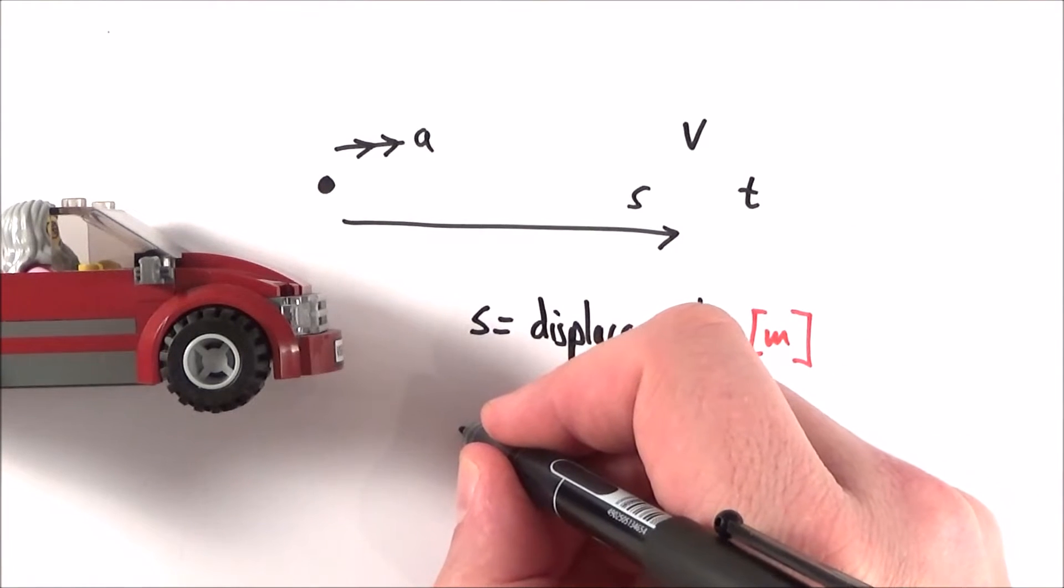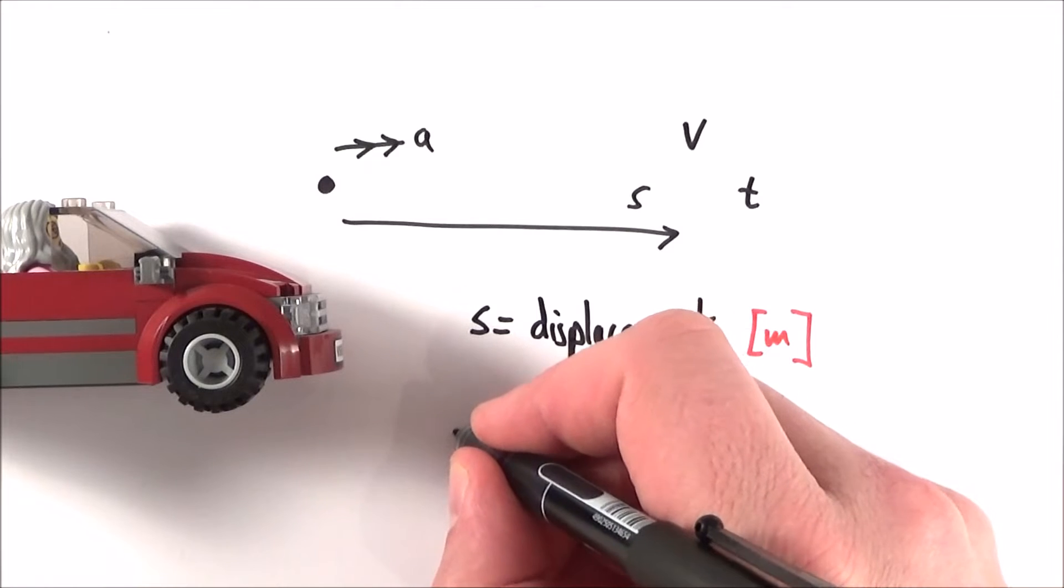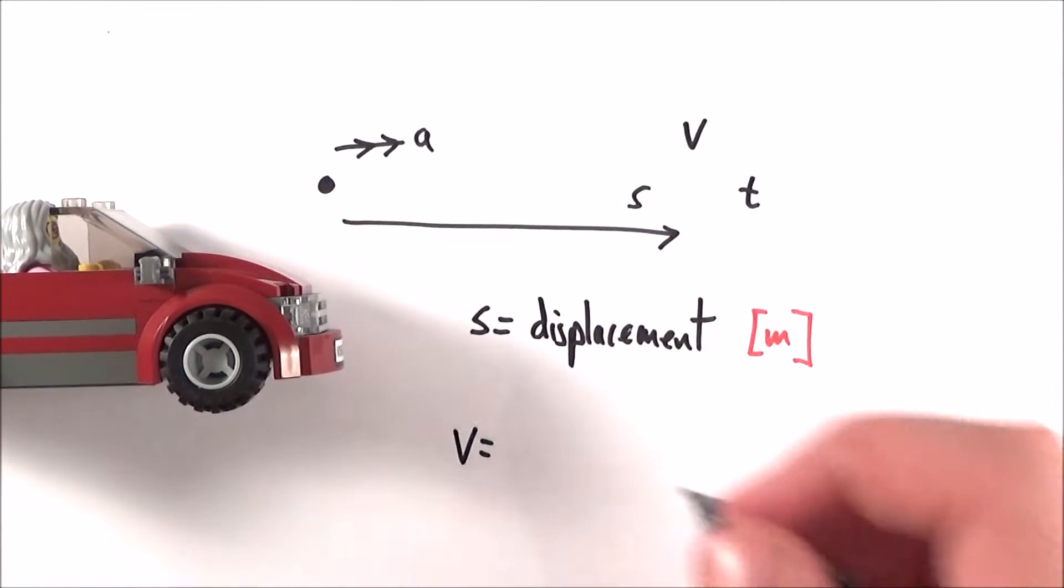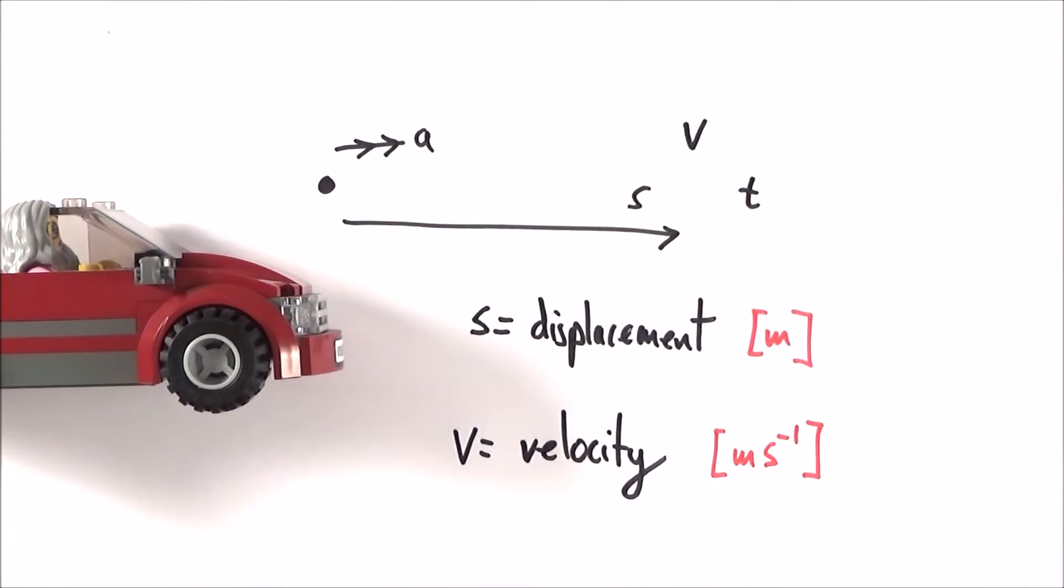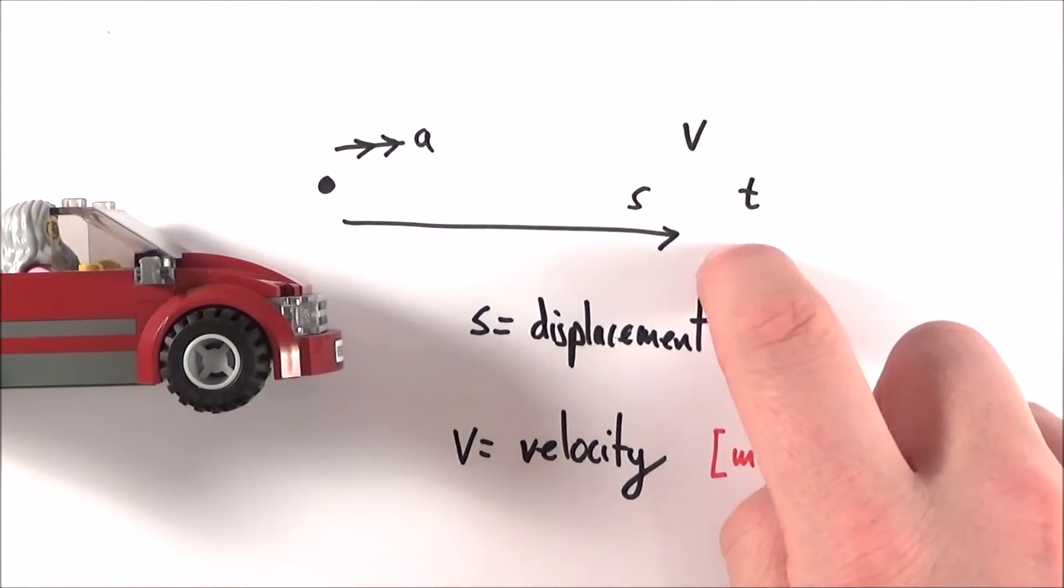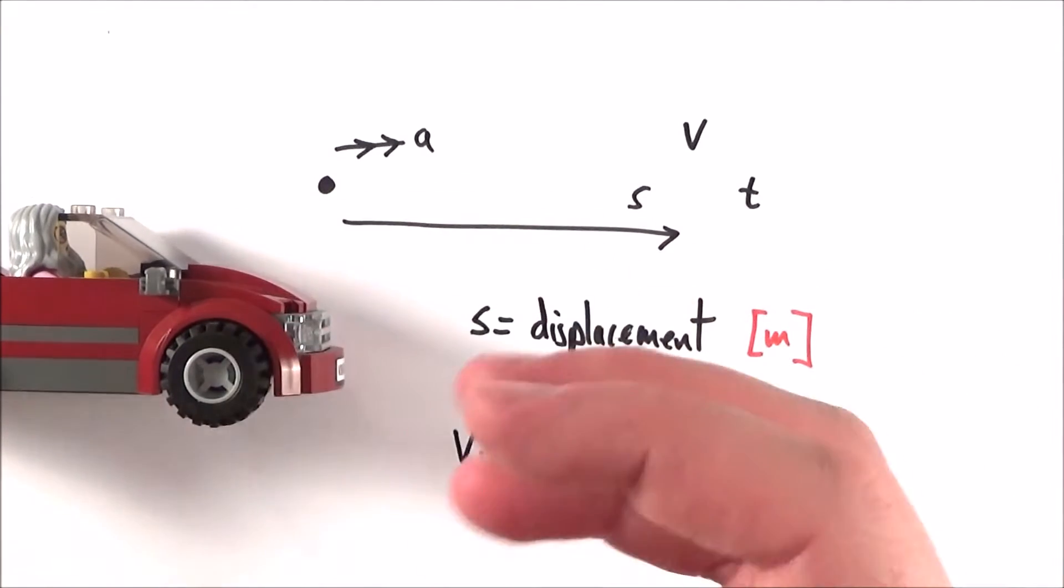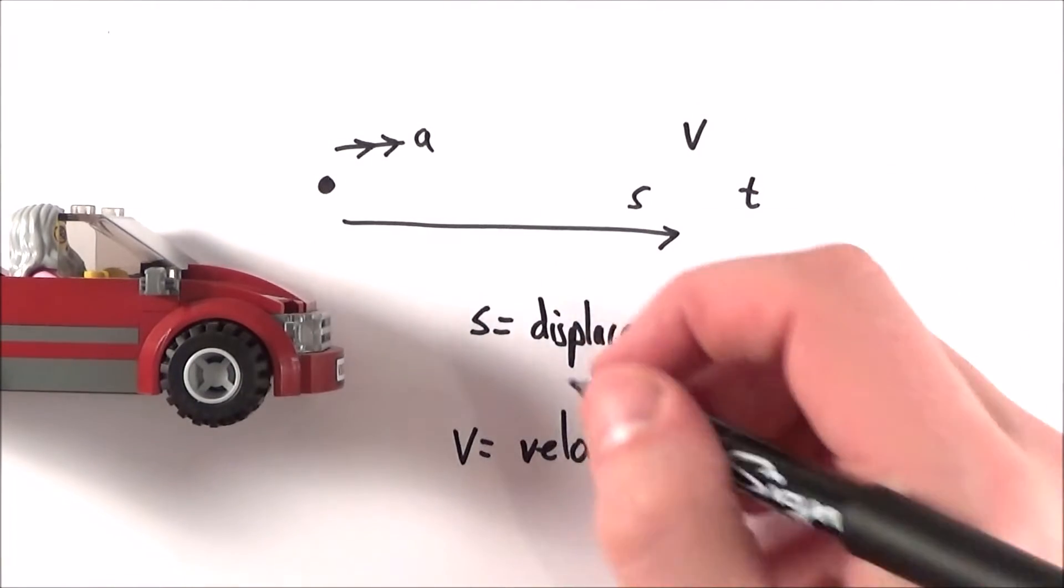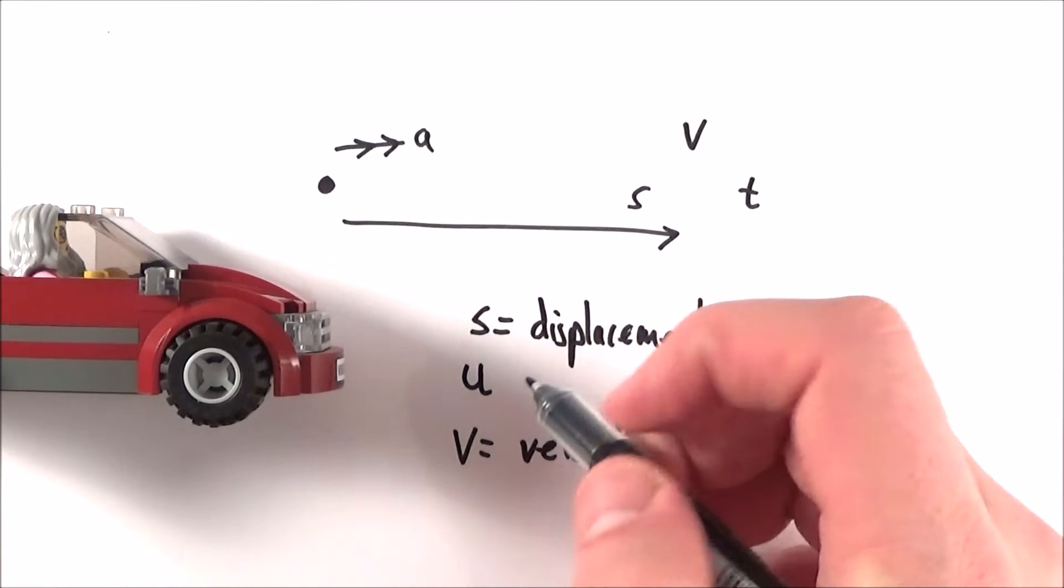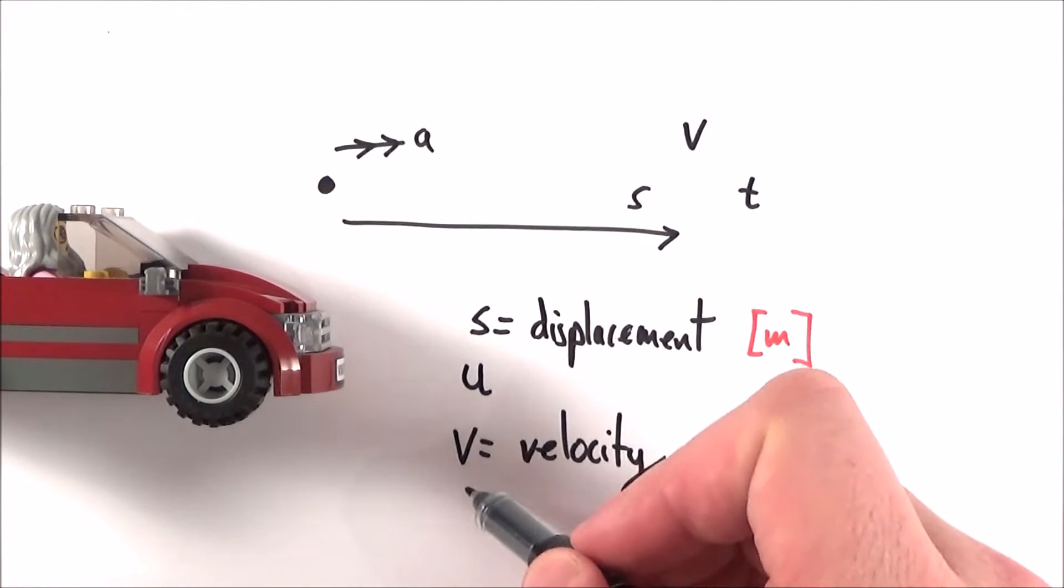Next, the final velocity is given the symbol v, measured in meters per second. However, if something is accelerating, we also need the initial velocity, which we call u. I'll make this clear: u has a tail and v is pointy.